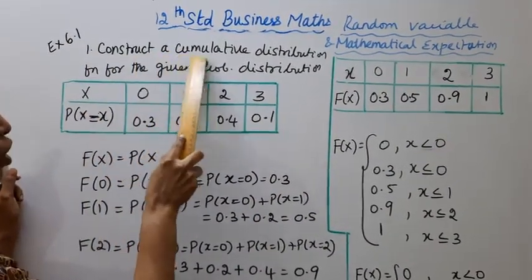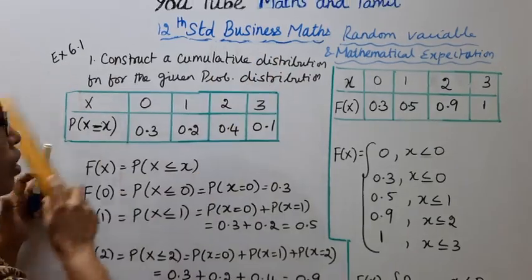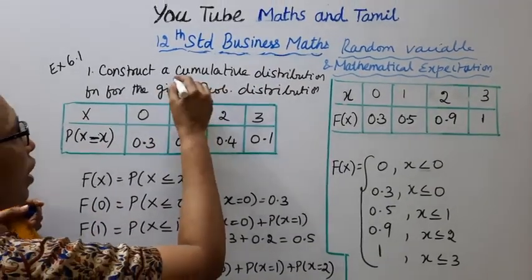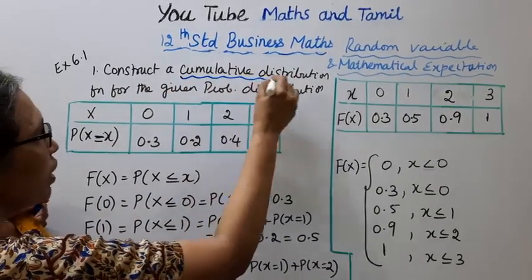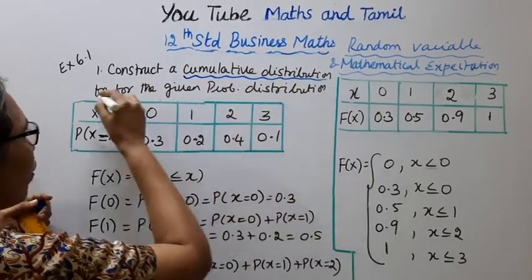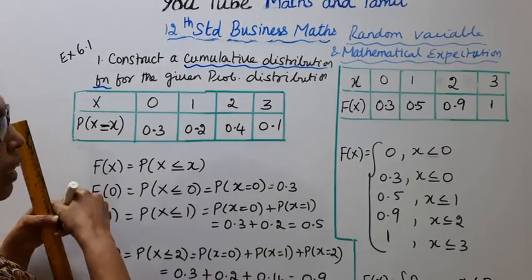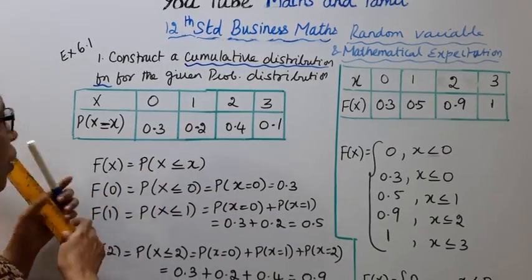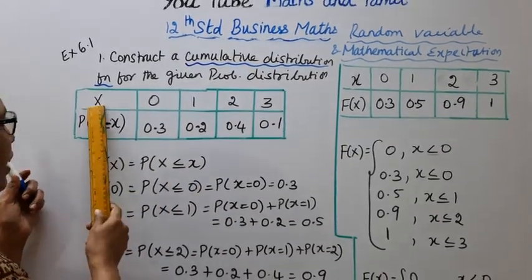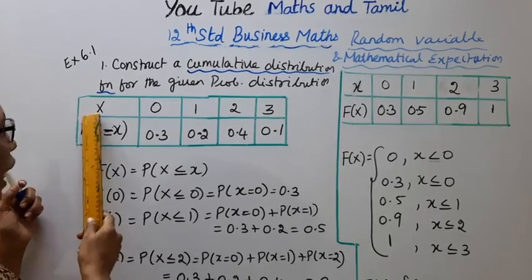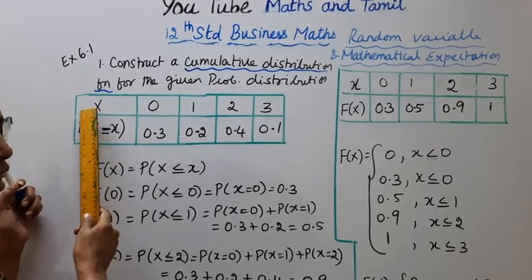Construct the cumulative distribution function for the given probability distribution. X, P(X) — capital X.